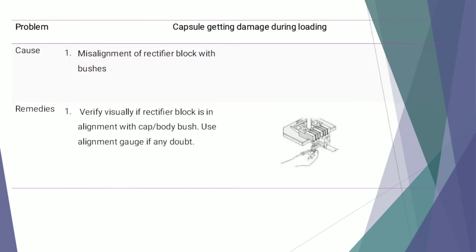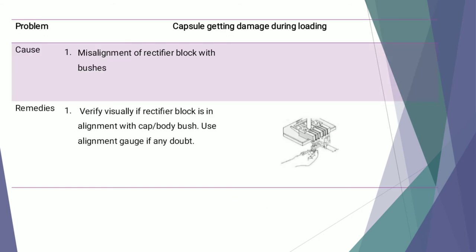The next defect is capsule getting damaged during loading. The cause is misalignment of the rectifier block with the bushes. The remedy is to visually verify that the rectifier block is in alignment with the cap body bush, and to use an alignment gauze if there is any doubt.